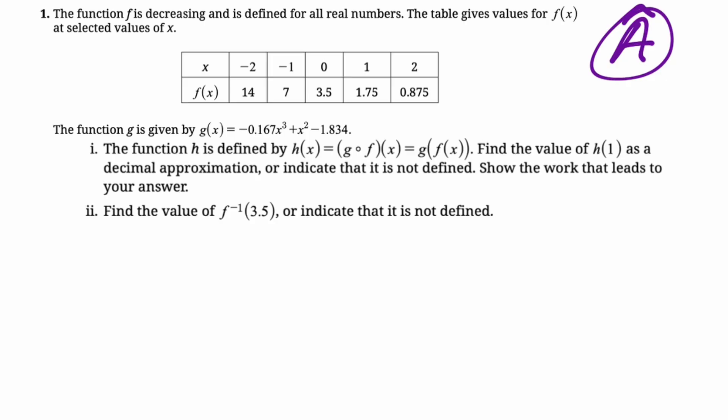So let's see what it looked like. Number one, the function f is decreasing and is defined for all real numbers. The table gives values for f(x) at selected values of x. We have a table. The function g is defined by g(x) equals negative 0.167x cubed plus x squared minus 1.834. Kind of an ugly function.